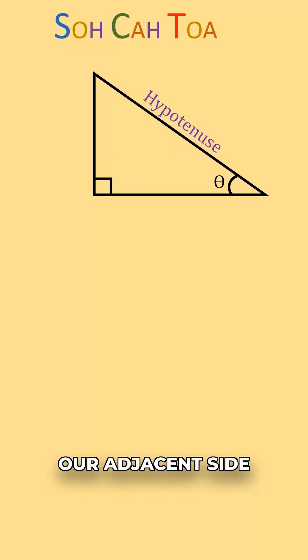Next, we can say our adjacent side is the side that's touching our angle theta. That's not the hypotenuse. So our adjacent side would be this side down here.